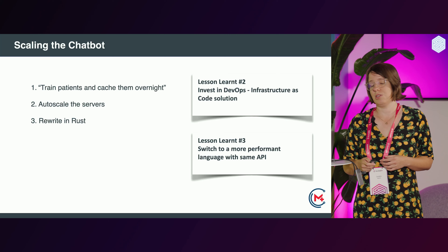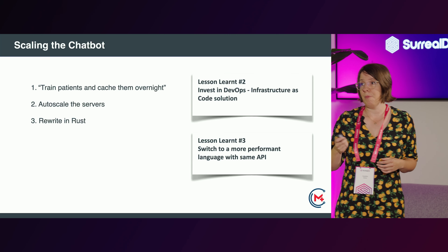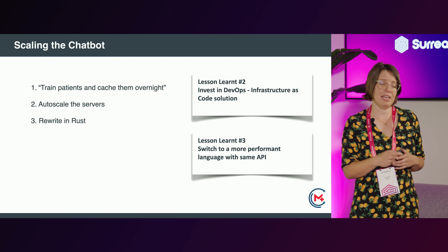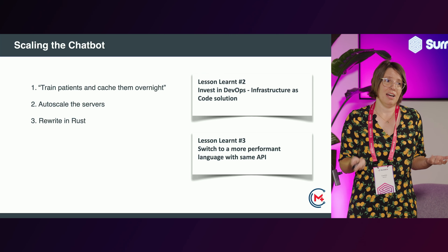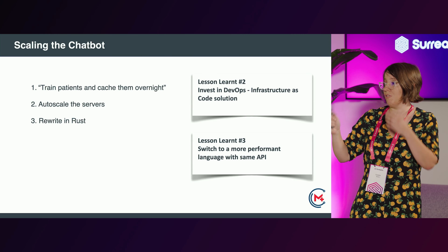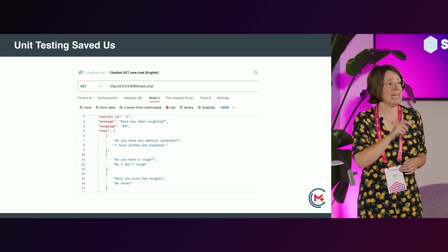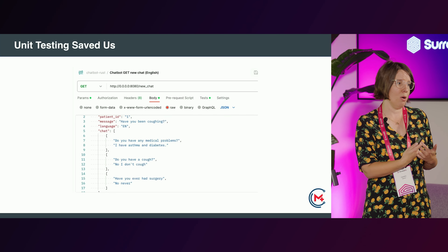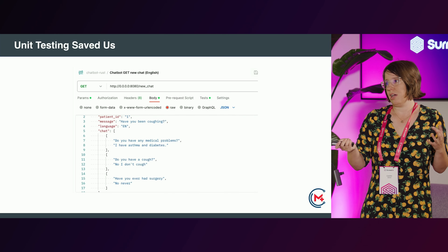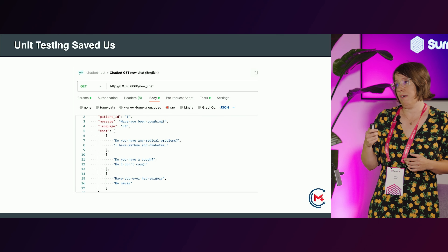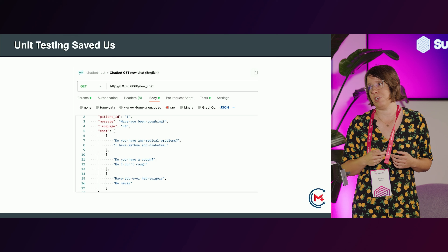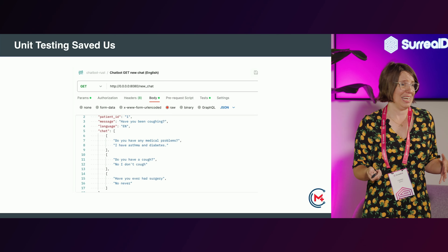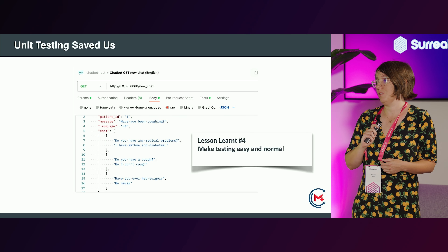The third lesson was that ultimately the chatbot needed to be rewritten. We were using Python, which we were most familiar with, but we decided to switch to Rust. Sometimes if there's a slow part of your system you just have to switch to a different language. Unit testing completely saved us here — with just the two of us, we kept the API exactly the same between Python and Rust, which meant we could swap it out and know it wasn't going to break anything else in our cluster.